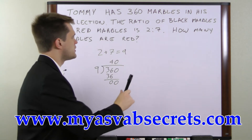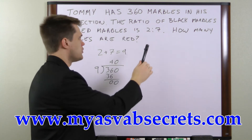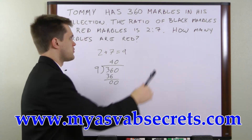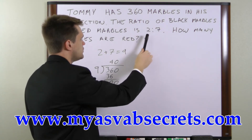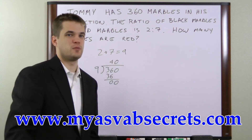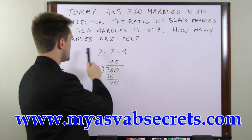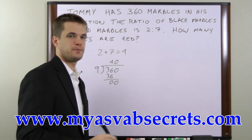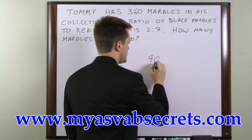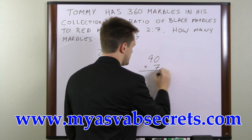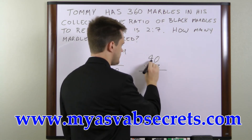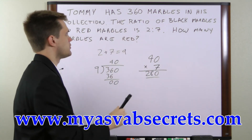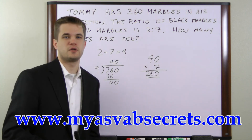Now we can find the number of each type of marble by multiplying the number that represents that type in the ratio by 40. So to find the number of black marbles we can multiply 40 by 2, and to find the number of red marbles we can multiply 40 by 7. Since the question is asking how many marbles are red, we'll multiply 40 by 7. 7 times 4 is 28, so that equals 280 marbles. So of the 360 there are 280 red marbles.